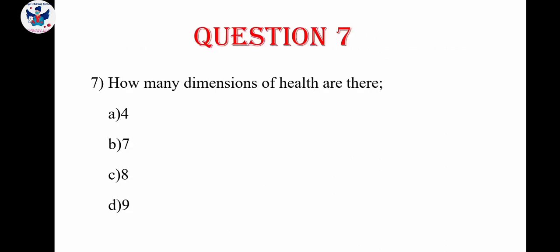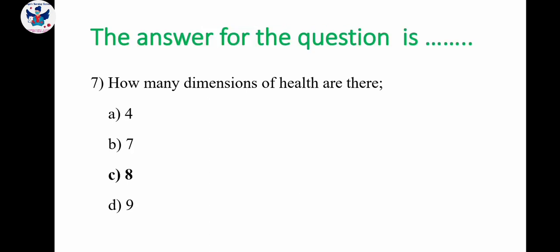Question number 7. How many dimensions of health are there? A. 4, B. 7, C. 8, D. 9. The correct answer is option C, 8.